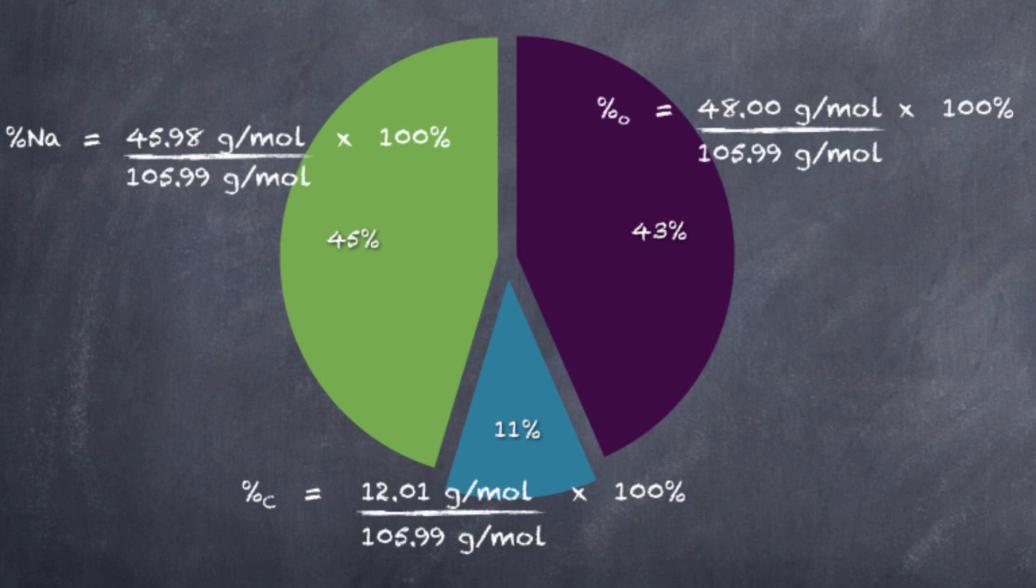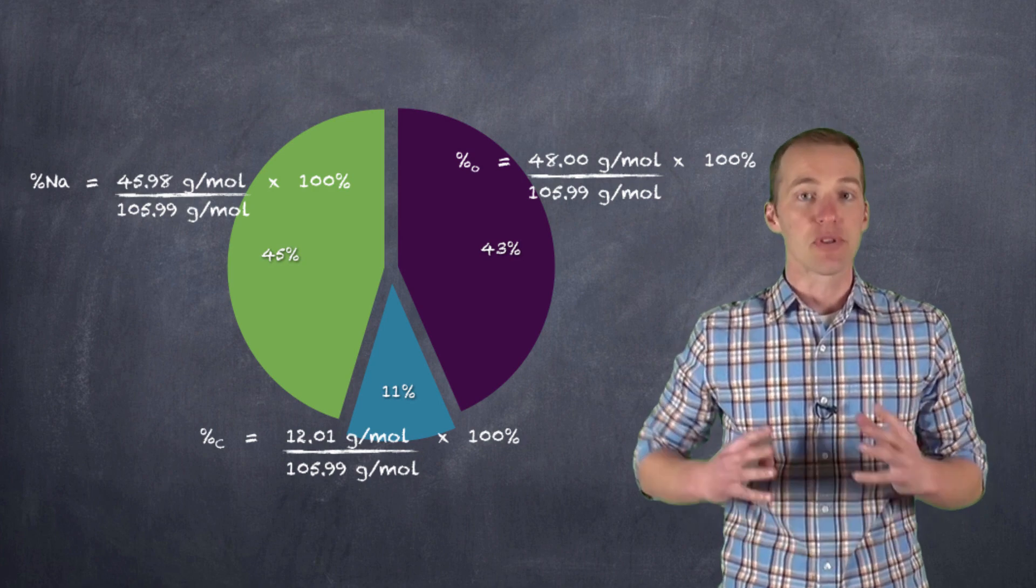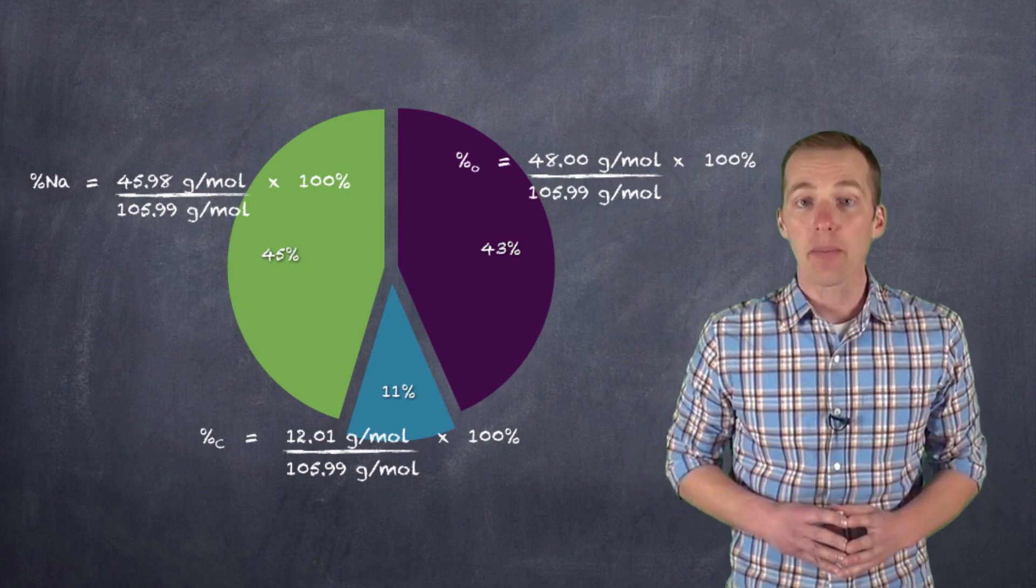So in communicating this as a chemist, you would say that we have a compound that's 43% oxygen by mass, 11% carbon by mass, and 45% sodium by mass. And this would, of course, represent the percent composition of sodium carbonate.